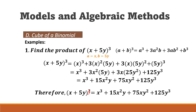This method is easier than using FOIL, because with FOIL you would first multiply (x + 5y)(x + 5y) and then multiply the result by (x + 5y) again, making it a much longer solution.